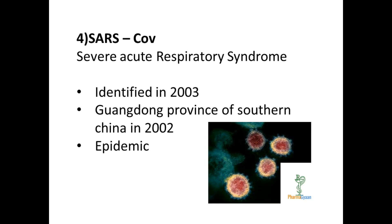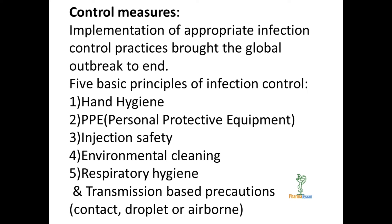The fourth one is SARS — Severe Acute Respiratory Syndrome coronavirus. SARS coronavirus was identified in 2003. The outbreak started in Guangdong province of southern China in 2002. It was not a pandemic but an epidemic.